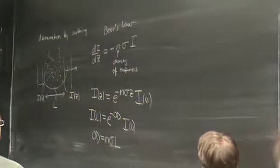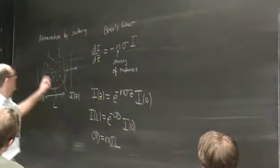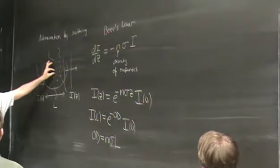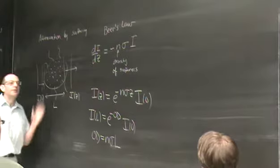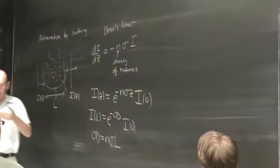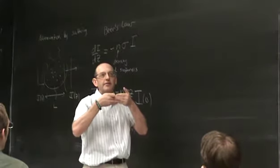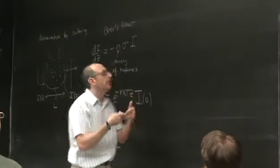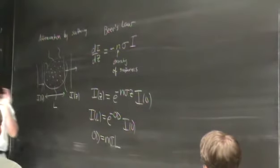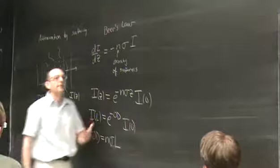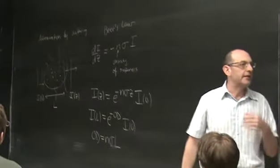The way we obtained this law was to say: we know what the power scattered by each scattering center is, and in a particular slice the transmitted power was the incident power minus the amount scattered out. We said the total scattered power was the sum of powers scattered from each individual scattering center.